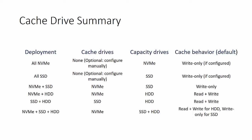For NVMe plus hard disk drives, NVMe is used for cache, hard disk drives are the capacity drives, and that configuration supports both read and write caching. For SSD plus hard disk drives, the SSD is the cache drive, hard disk drives are the capacity drives, and you can do read and write caching from the SSDs. For NVMe plus SSD plus HDD, the cache drives are NVMe, capacity drives are SSD and HDD, with read-write caching for the HDDs and write-only caching for the SSDs.